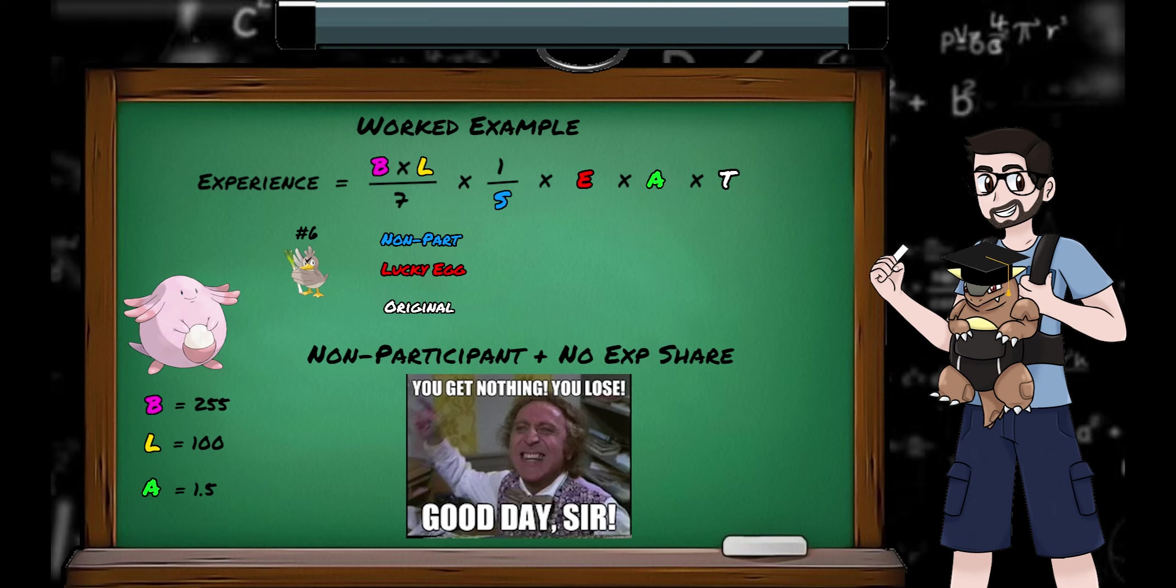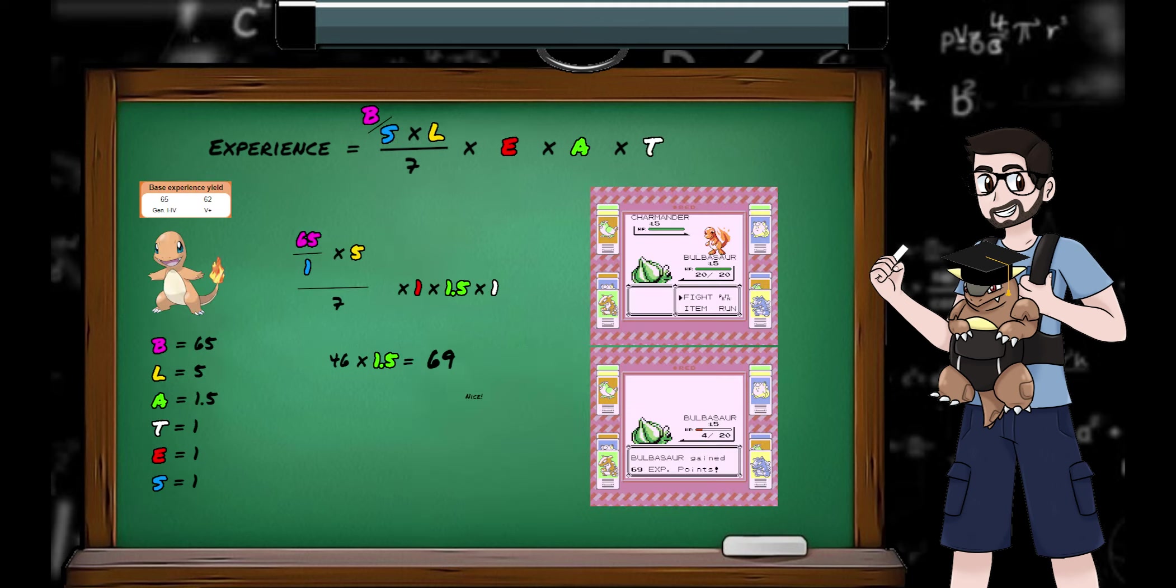We come to the end of this PokeMaths, and I find myself finally able to answer the question that bugged me since I was old enough to read a rude magazine that I found in the woods. Why does defeating Charmander in the lab battle give you 69 experience points? Charmander is level 5, with a base yield of 65, 65 times 5 divided by 7 is 46. It's a trainer battle with a single non-traded participant and held items didn't exist, which gives us 46 times 1.5, which is 69.